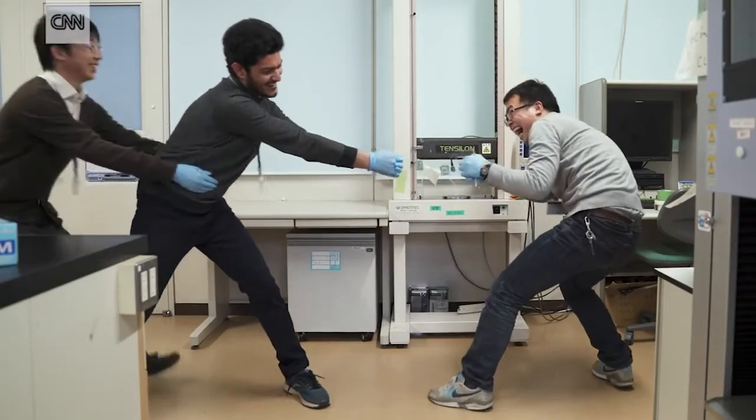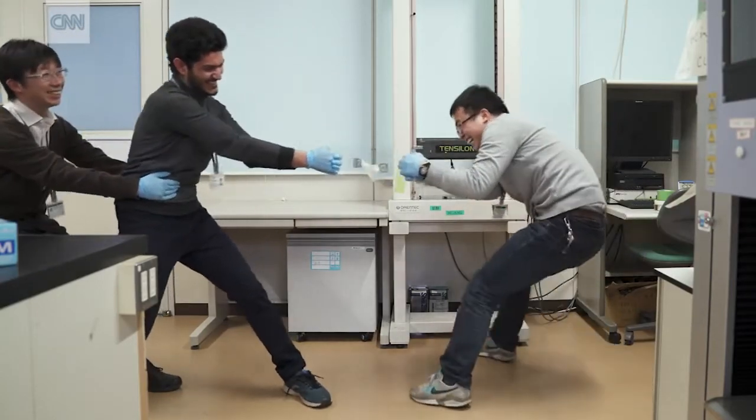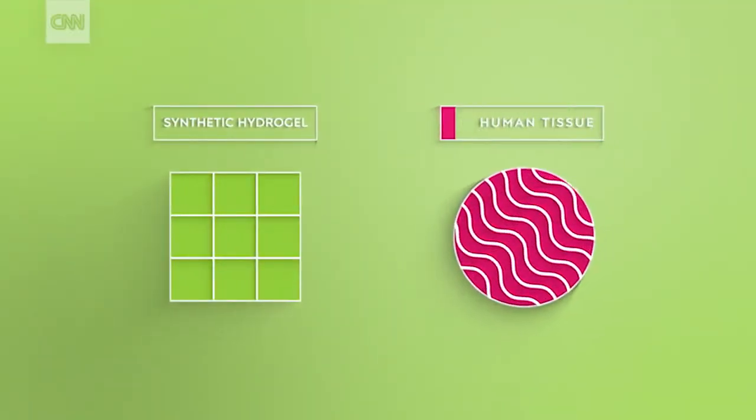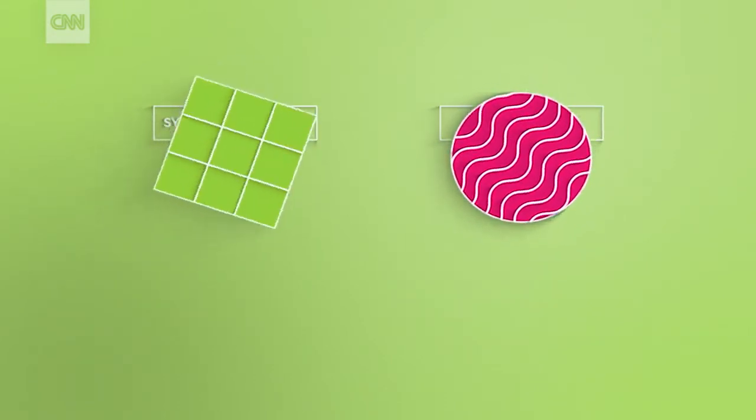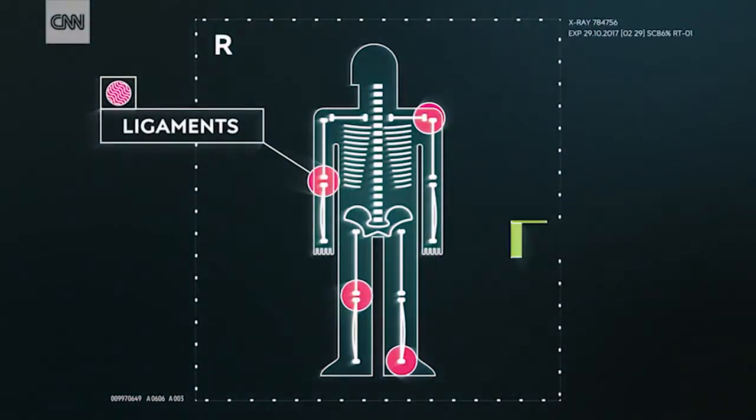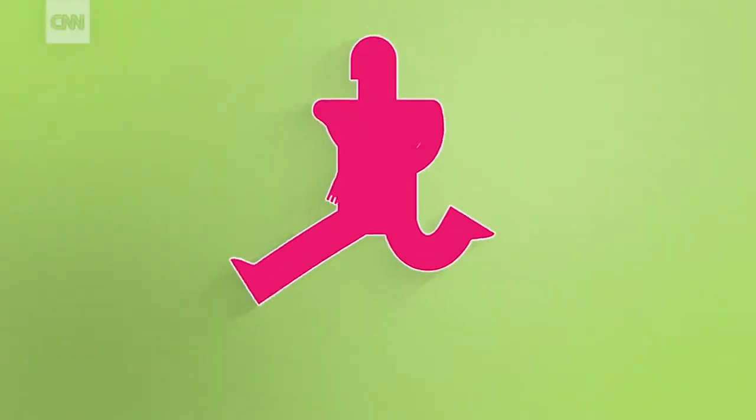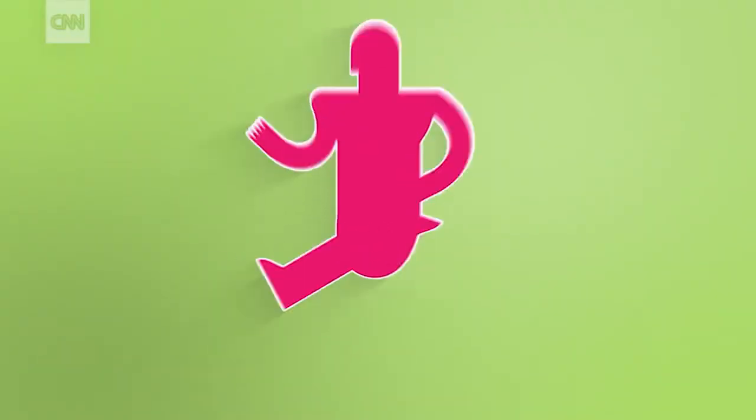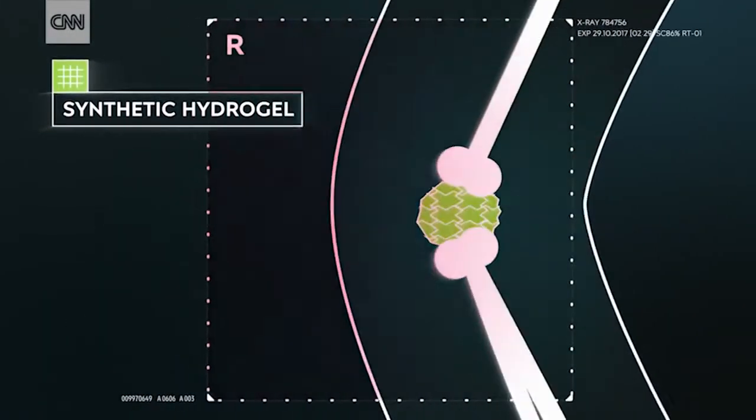The team believes this will revolutionize joint replacements. Synthetic hydrogels are similar to human tissue, both soft and flexible, which means they'd make great substitutes for ligaments or tendons. But until now, synthetic hydrogels have been too weak to withstand a joint's everyday wear and tear.